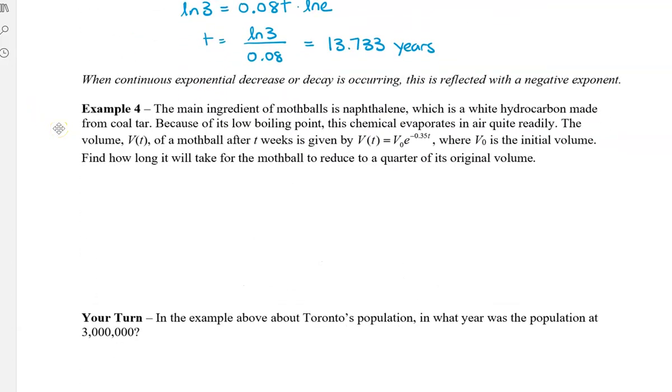Let's take a look at the second problem. So remember that when continuous exponential decrease or decay is occurring, we need to reflect this with a negative exponent. So the main ingredient of mothballs is naphthalene, which is a white hydrocarbon made from coal tar. It's probably why it's so stinky. So because of its low boiling point, this chemical evaporates in air quite readily. So the volume V of t of a mothball after t weeks is given by V of t equals V naught times e to the power of negative 0.35t, where V naught is the initial volume. Find how long it will take for the mothball to reduce to a quarter of its original volume.